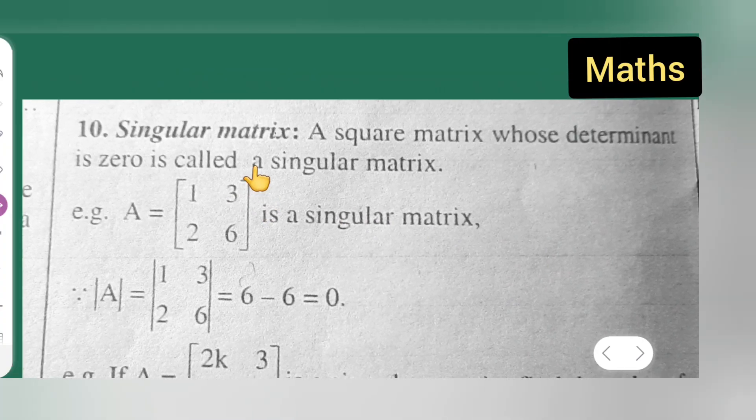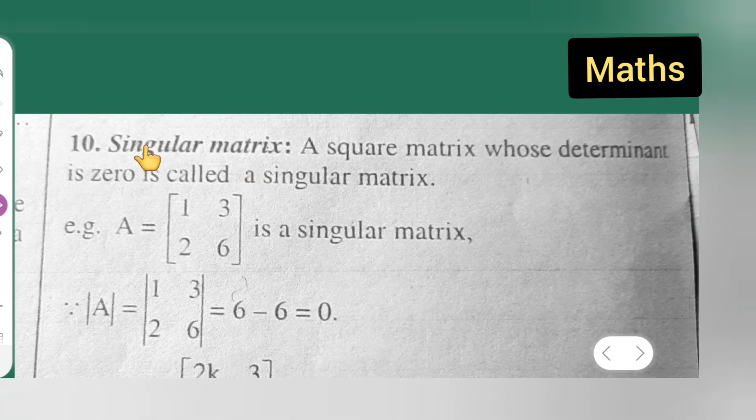I hope you all can see this clearly and you all can read it. Singular matrix: a square matrix whose determinant is 0 is called a singular matrix.